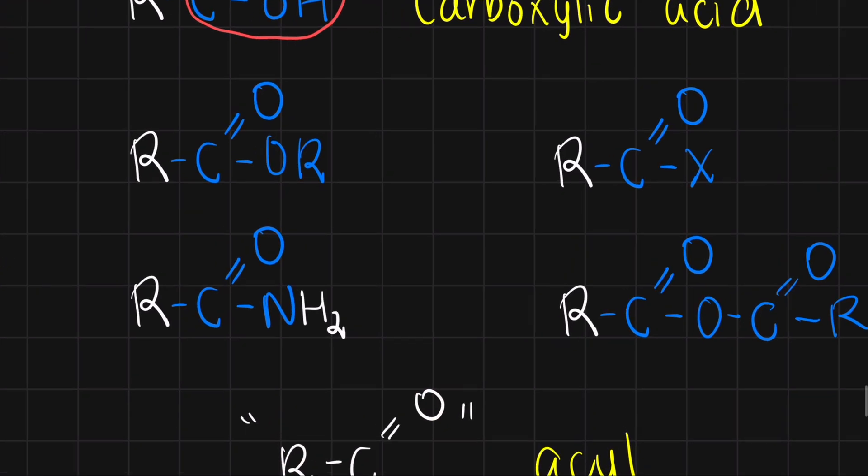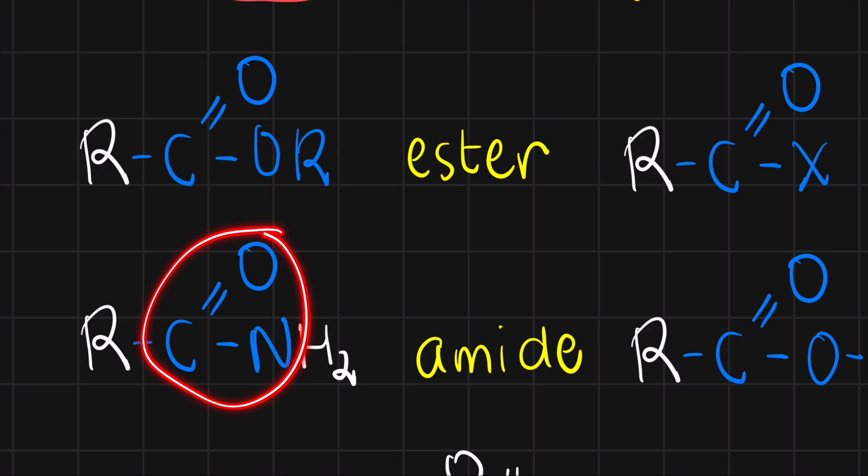So what if this time my acyl group is attached to an OR? I can now call this an ester. How about if I have my acyl group attached to a nitrogen? I can call this an amide. And notice, I again did not highlight the hydrogen because I can replace this with carbons and we will still be calling it an amide as long as I have the CON.